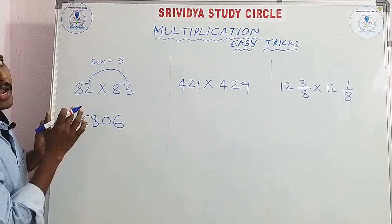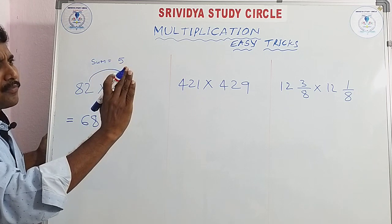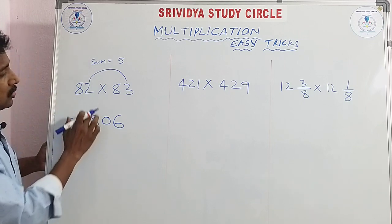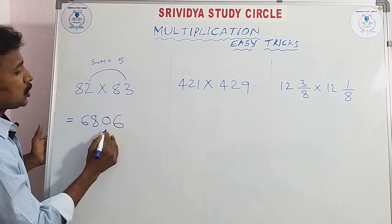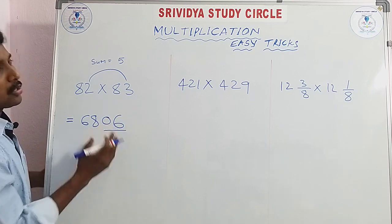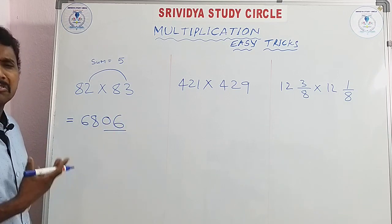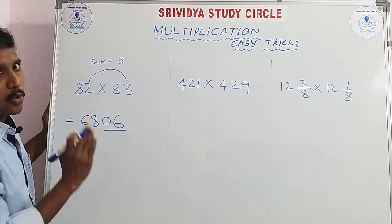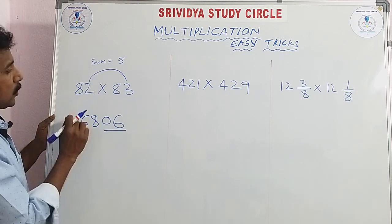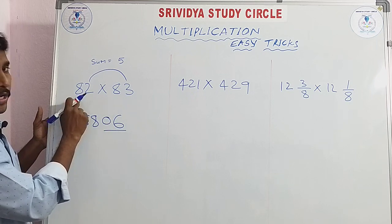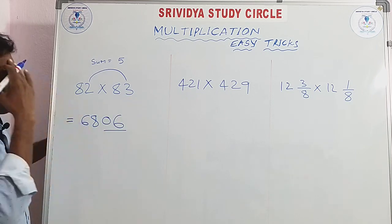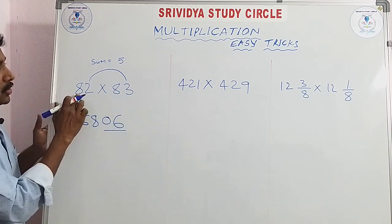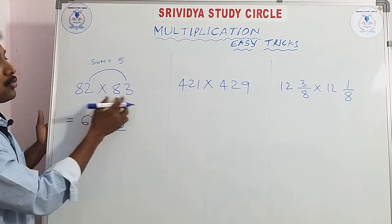Just take 8 squared plus 8 divided by 2. 8 squared is 64, 8 divided by 2 is 4, so 64 plus 4 equals 68. Then the remaining part: 2 × 3 = 6. We cover two digits and one digit — so the answer is 6886. Friends, similarly: 81 × 84, 71 × 74, 21 × 24, 91 × 94.